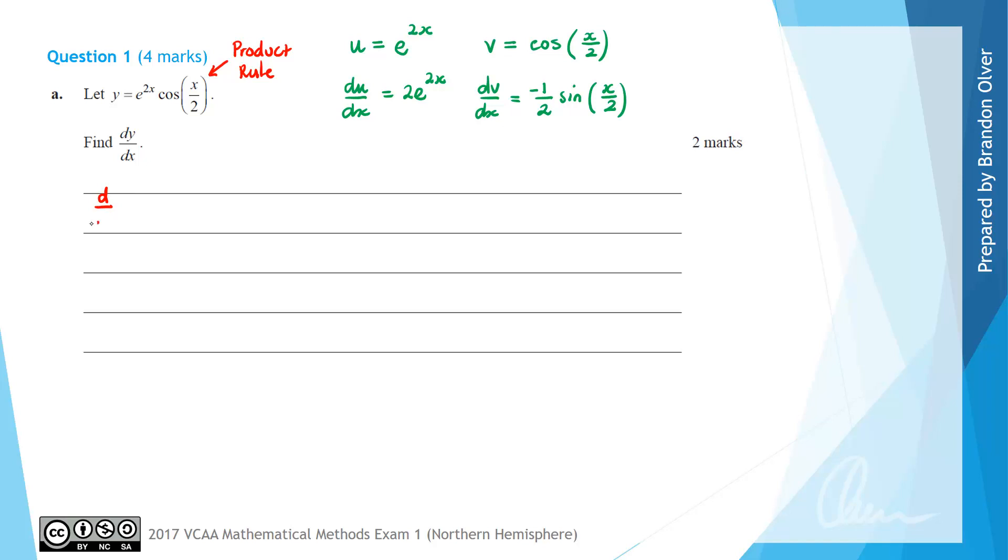Next, on the formula sheet we know the derivative of a function u multiplied by v is simply equal to u × dv/dx + v × du/dx.